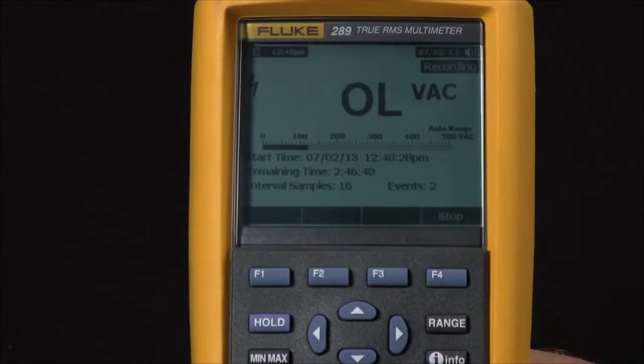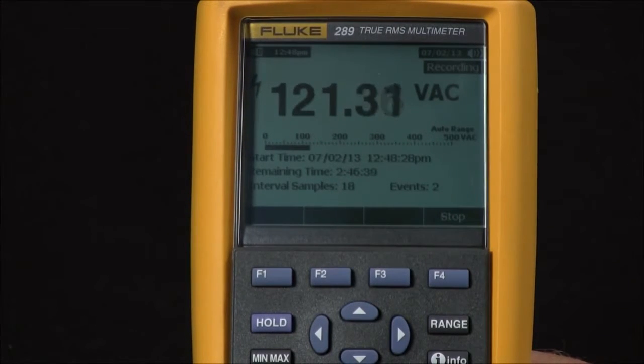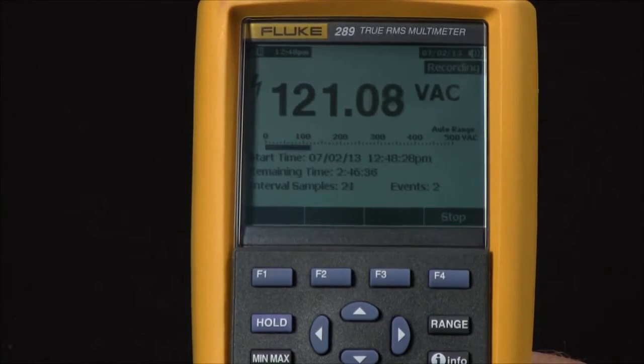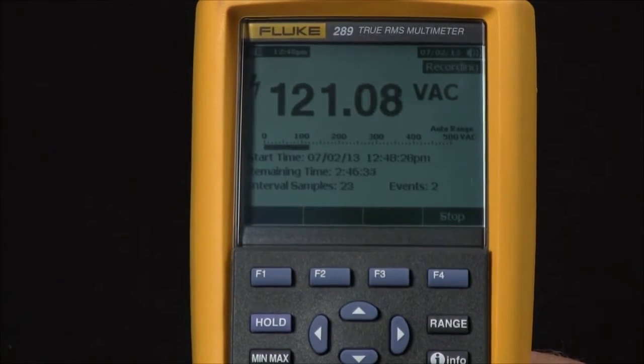So we actually have two different data points going at the same time: one for high-speed events and one for whatever timed cycling we set.